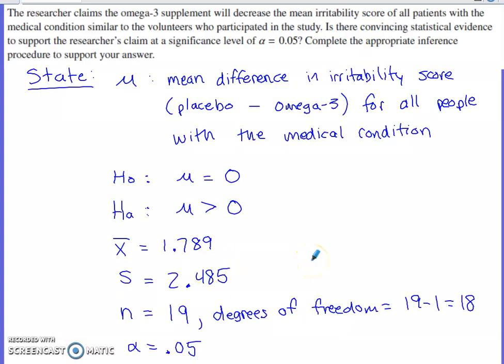Researcher claims the omega-3 supplement will decrease the mean irritability score of all patients with the medical condition, similar to volunteers who participated in the study. They're trying to make a judgment about the full population based on the 19 individuals from this study.